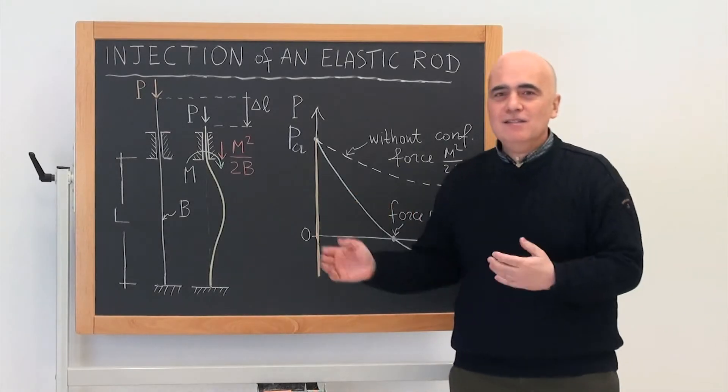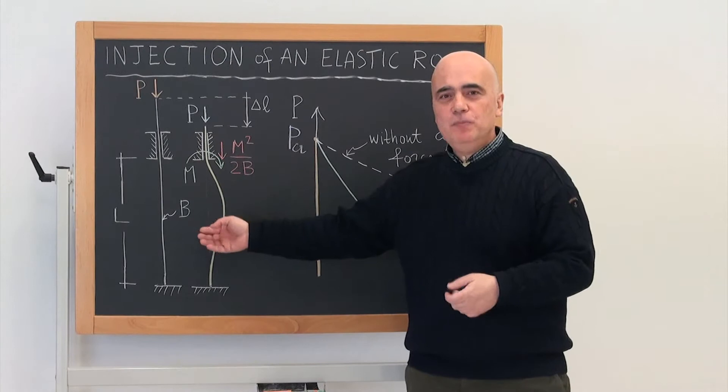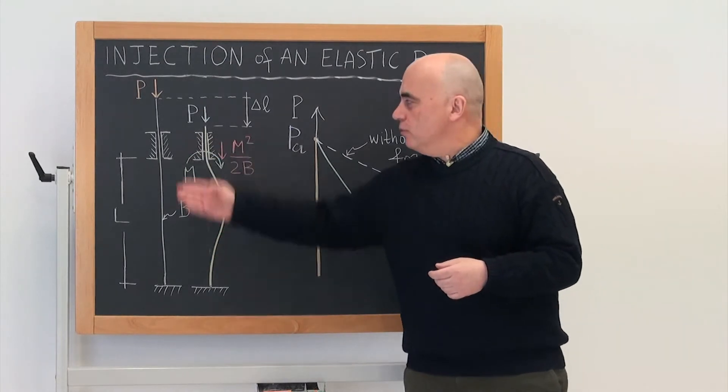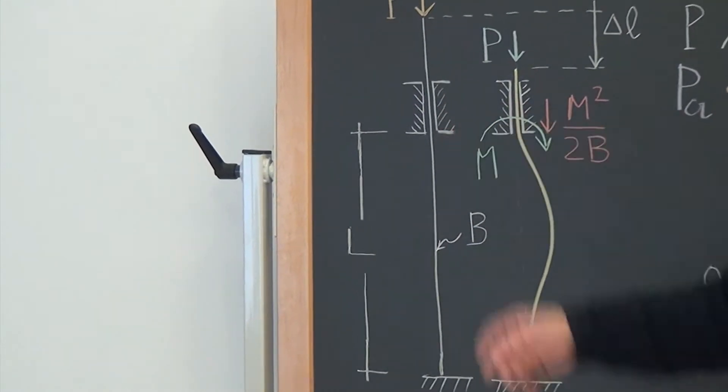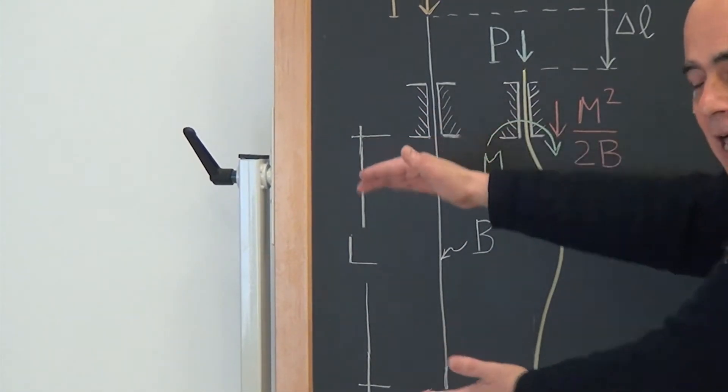We analyze an elastic rod of bending stiffness B, straight in the unloaded configuration and constrained with a clamp and a sliding sleeve at a fixed distance L.